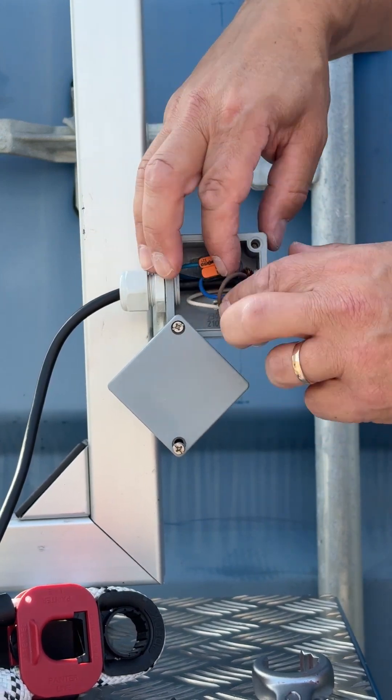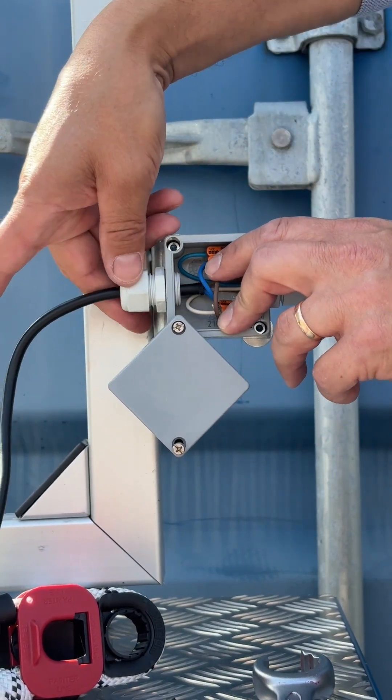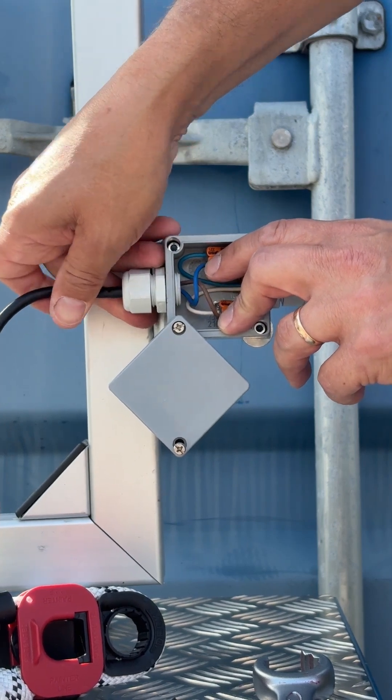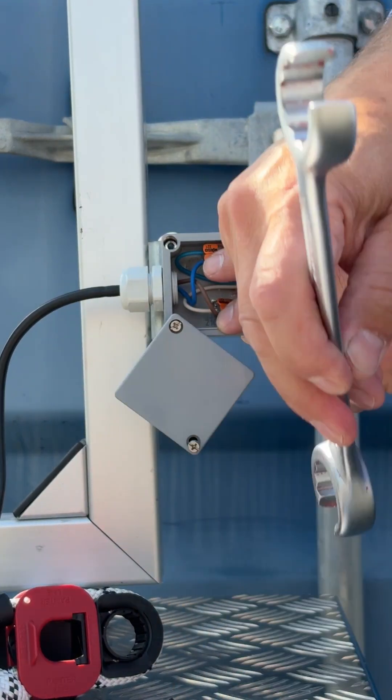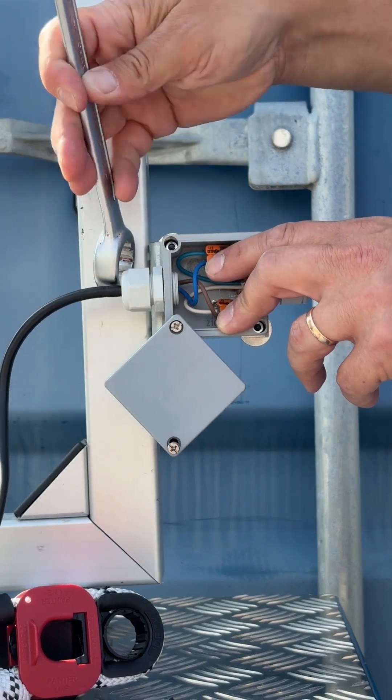Fit the cables into the connector box and adjust the ERU's cable in the gland. Use the spanner to tighten the gland.